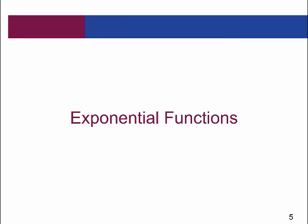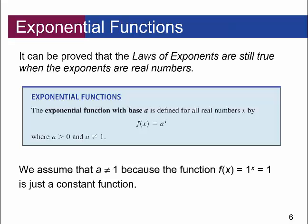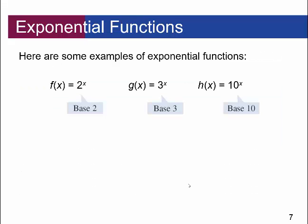Let's talk about exponential functions in a little more detail. It can be proved that the laws of exponents are still true when the exponents are real numbers. We define the exponential function with base a for all real numbers x as f of x is equal to a to the x, where a is greater than 0 but not equal to 1. We assume a is not equal to 1 because f of x equals 1 to the x is just a constant function — it's always equal to 1. Examples of exponential functions include 2 to the x, 3 to the x, and 10 to the x.